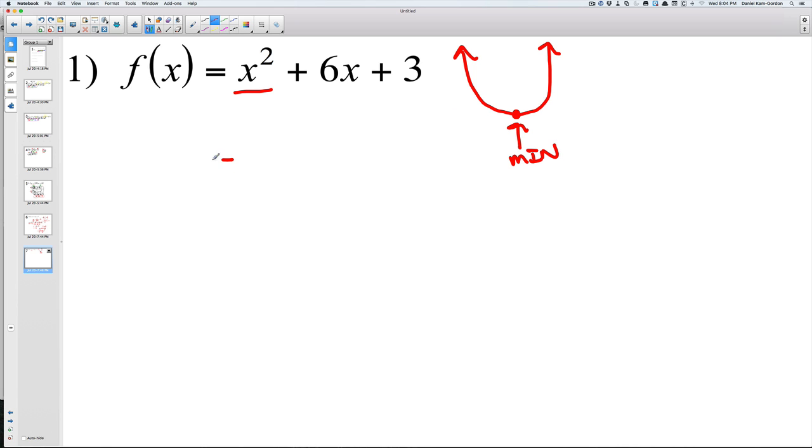However, if this number had been negative, like negative x squared, the parabola would look like this and it would go downwards and this would be your maximum.